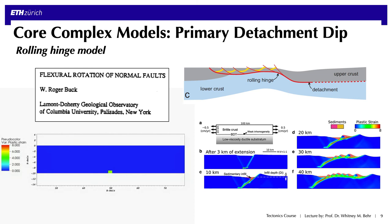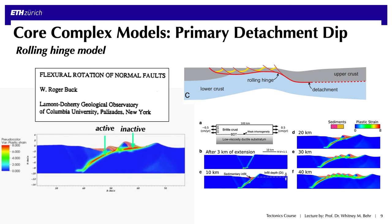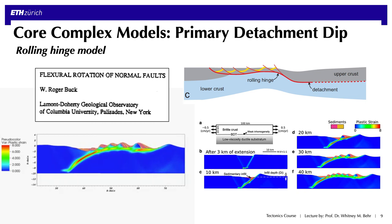This is perhaps easiest to illustrate with a video of a numerical model of a rolling hinge-type core complex. You can see how, as the detachment evolves, it starts to shallow and eventually sections of it become too shallow to slip, retaining one segment that is steep and active and another that is shallow and inactive. But overall, it can still slip and evolve into a classic core complex.